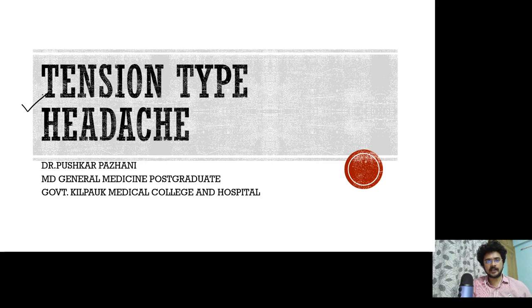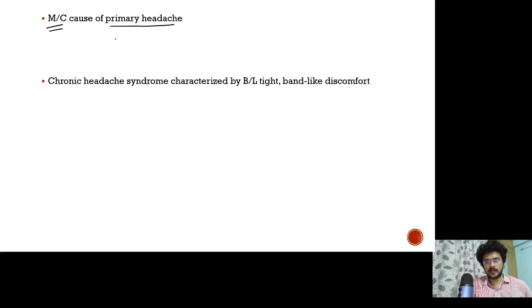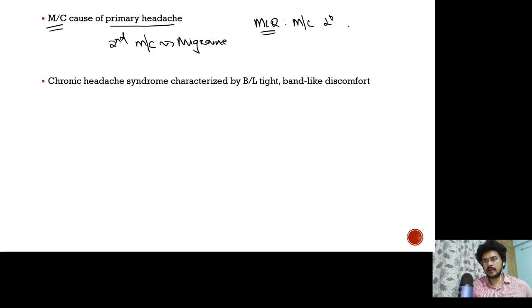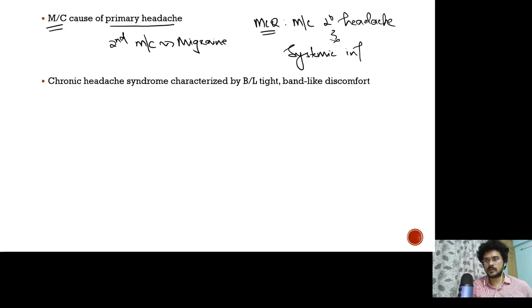Today's class is going to be on tension type headache. Tension type headache is the most common cause of primary headache. The second most common cause of primary headache is migraine headache. An important MCQ question: the most common cause of secondary headache is systemic infections. So don't forget — most common cause of primary headache is tension type headache, but most common cause of secondary headache is systemic infections.